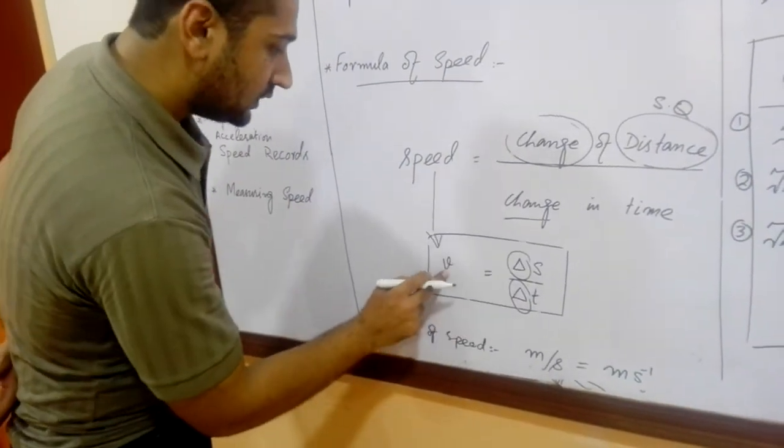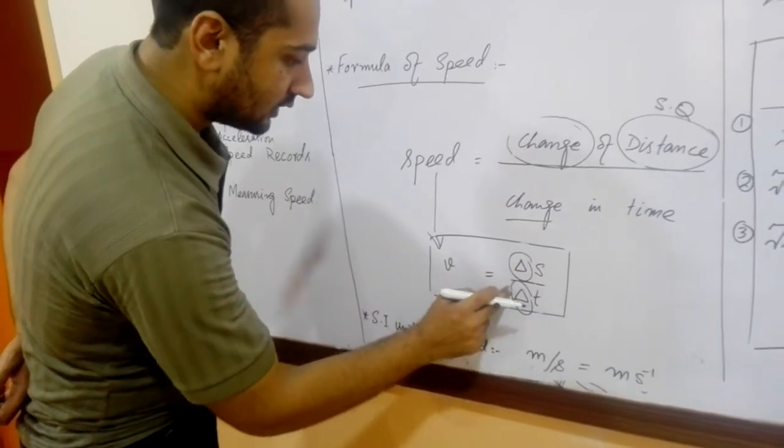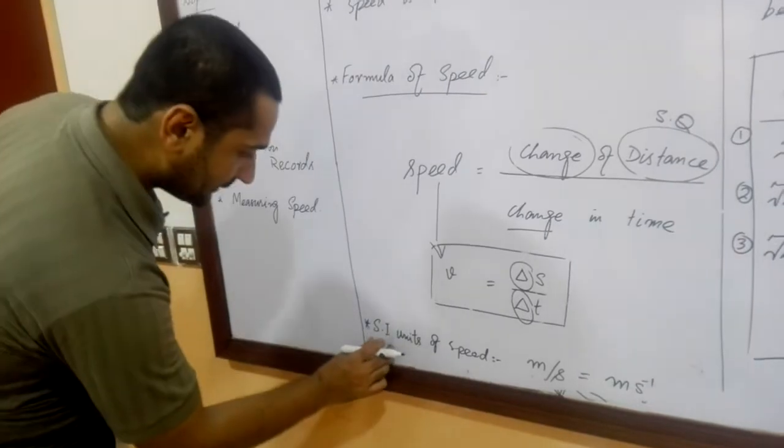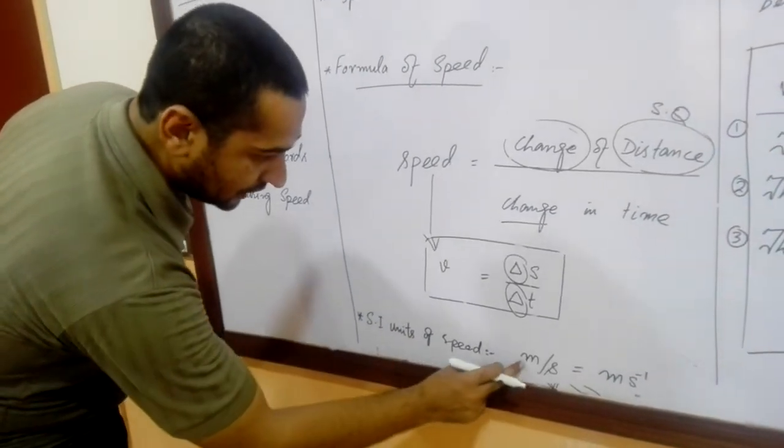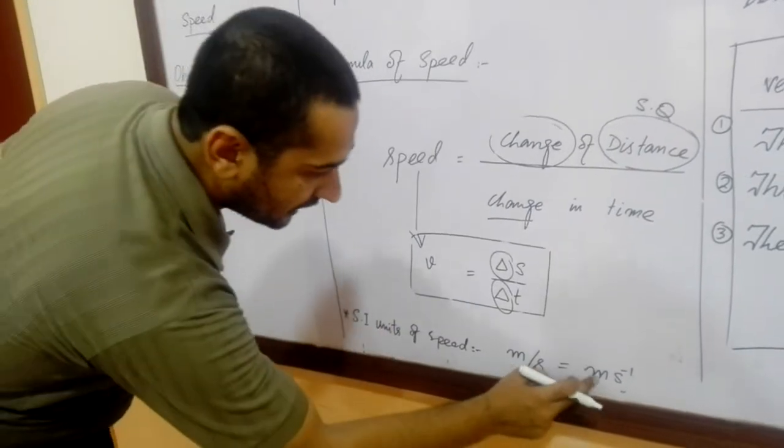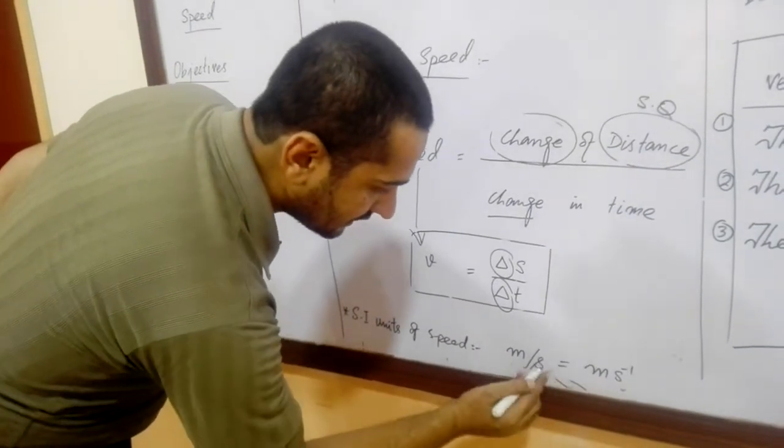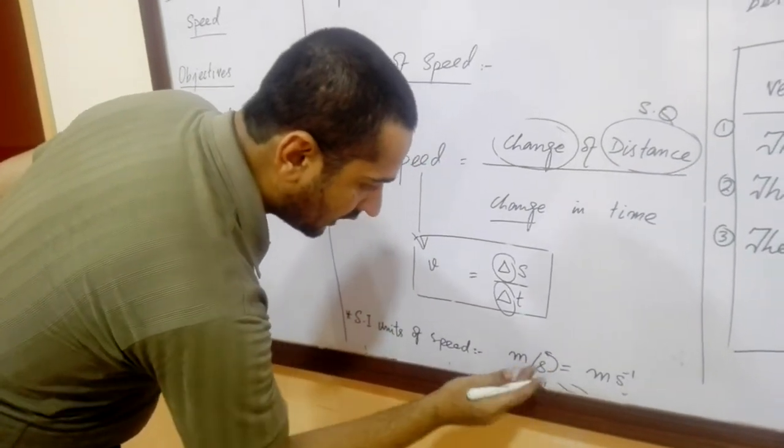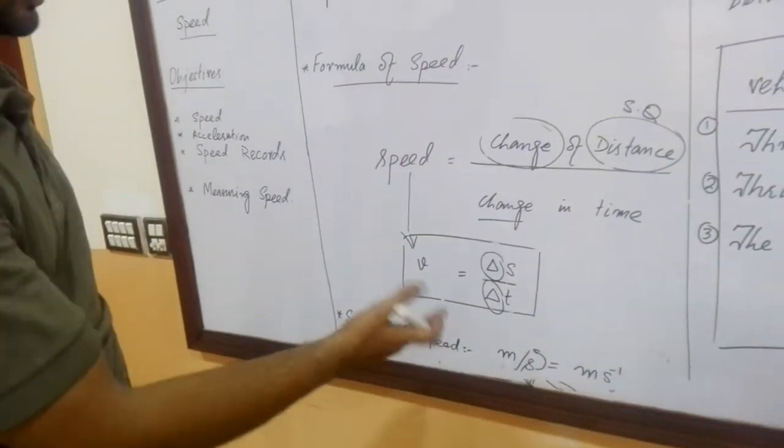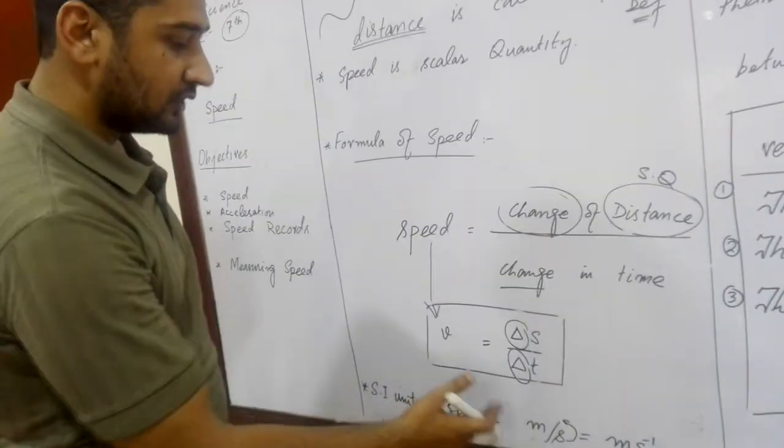So we can say that v is equal to delta s over delta t. Now the system international unit of speed is meter per second, which is also represented as meter and second inverse by moving on the upper side of the bracket division. We can write down this is another form of unit of speed.